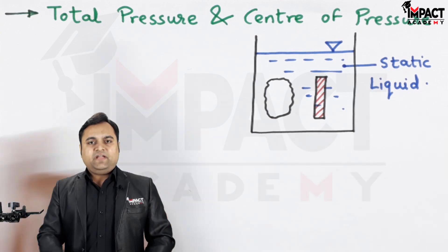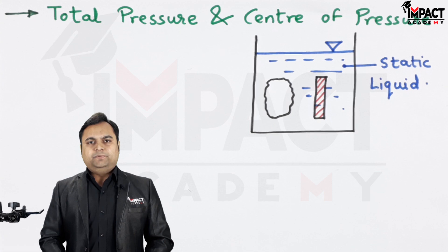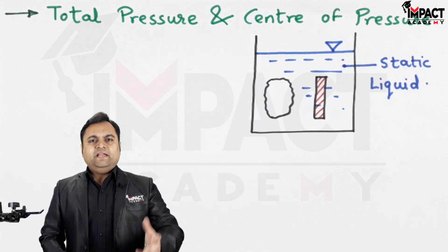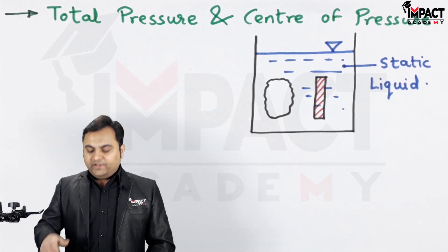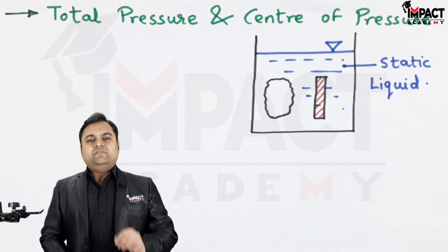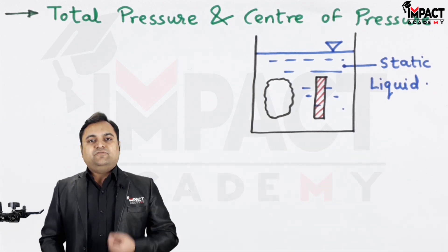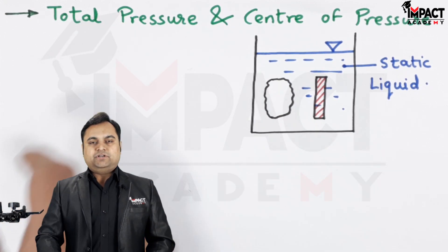This plate can have any given shape like it can be a rectangular plate, it can be circular plate, triangular plate or any other cross section. When that plate is immersed into the static liquid, there will be a force exerted by the liquid on this plate and that force is called as total pressure.